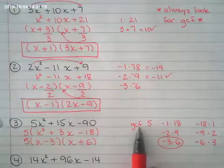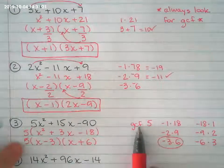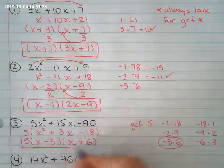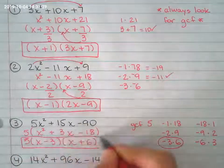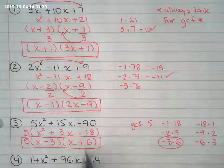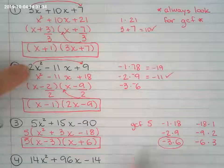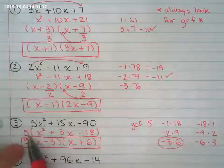And the GCF that you pulled out in the beginning doesn't disappear. It's still there. And you don't have to divide, because you didn't start out by multiplying by anything. You just pull the GCF out.